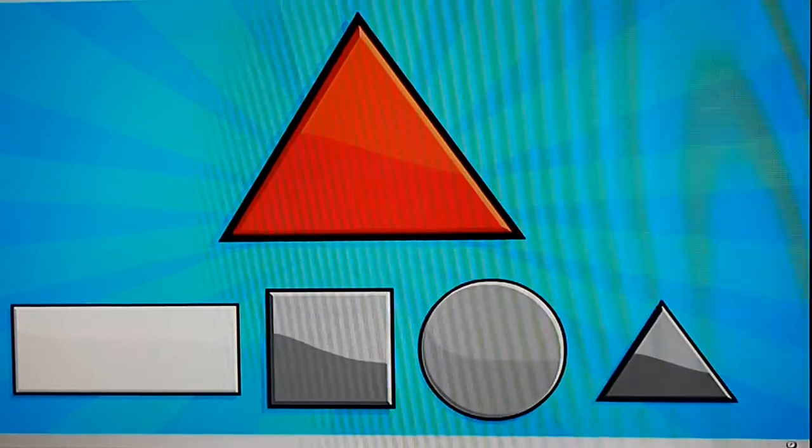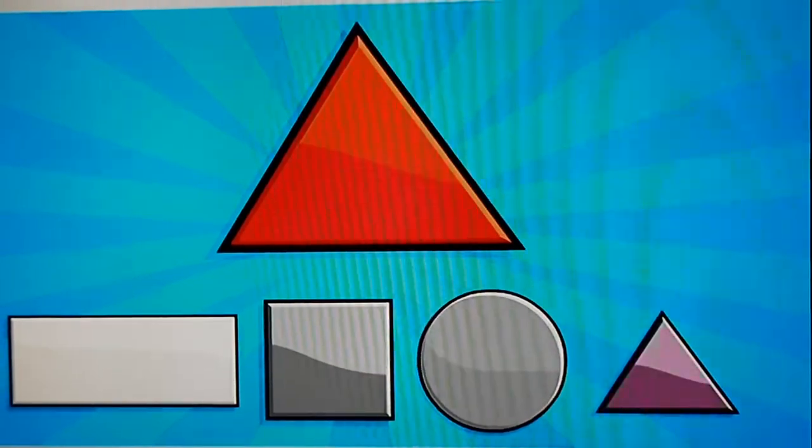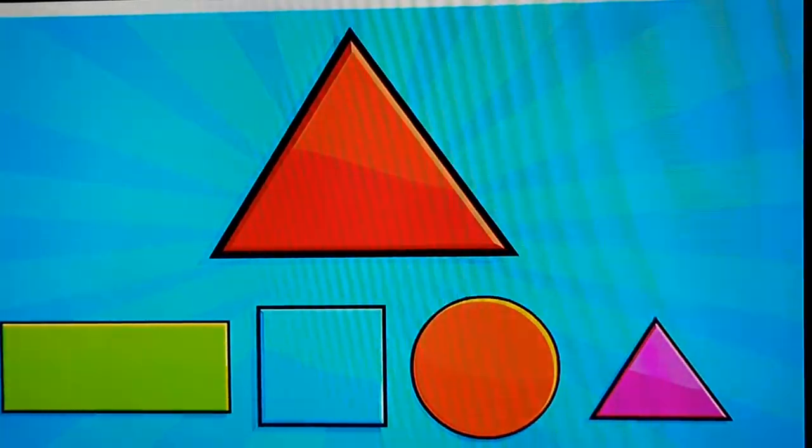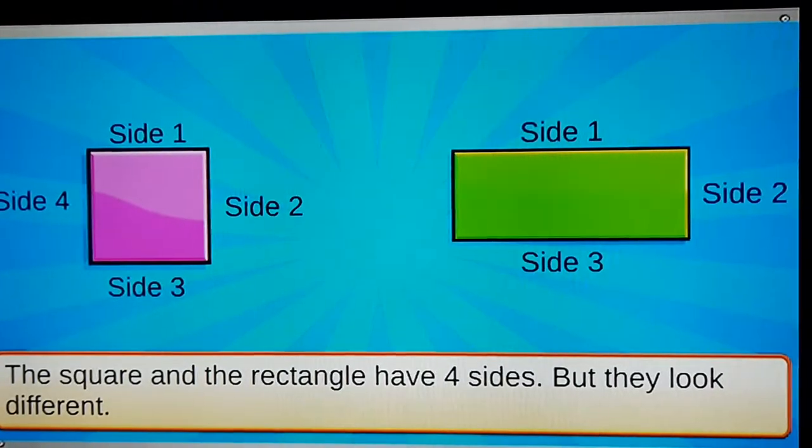A triangle looks like this. To find another triangle, look for the shape that looks the same as the one given.